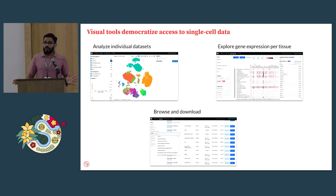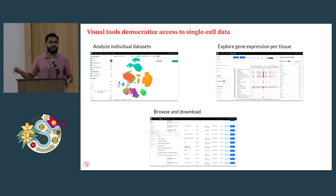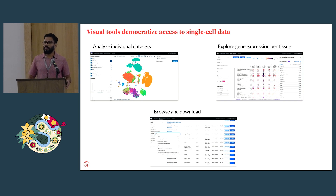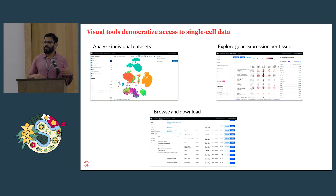With Cell by Gene we provide visual tools accessible online. You can analyze individual datasets interactively using a scatter plot visualization tool where each point represents a single cell, performing lightweight analysis on individual datasets. We also have a tool called Gene Expression where you can query the expression of any gene across all cell types of a given tissue, aggregating all data for that tissue. Finally, you can interactively browse and download individual datasets in the most common Python and R formats used in the single cell community.